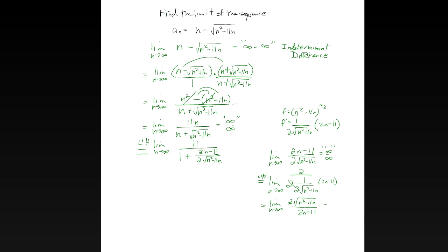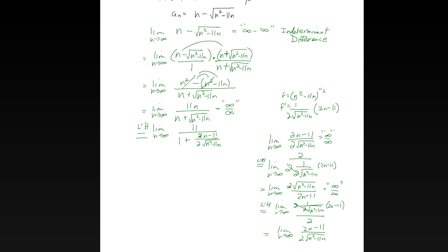Still infinity over infinity — one more time, let's see what happens. We get the same kind of thing: 1 over 2 square roots of n squared minus 11n, all over 2n minus — yeah, we're not getting anywhere. This is going to cycle. L'Hôpital's rule — we tried it and we're back where we started: 2n minus 11 over 2 square roots of n squared minus 11n.